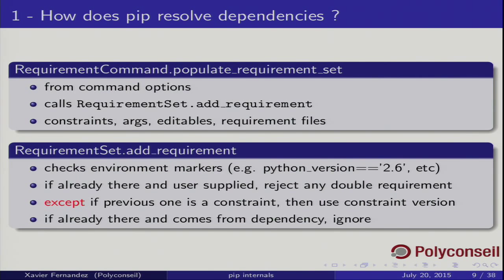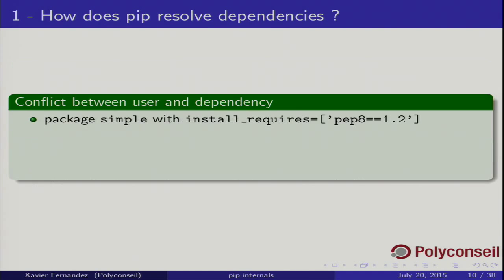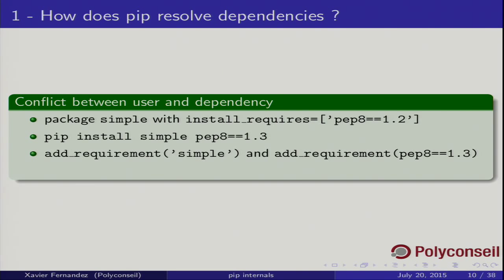Finally, this is how pip currently resolves dependencies: if you already have a requirement and another package requires the same package, it will just ignore it. For example, imagine you have a simple package with an install requirement on pyflakes version 1.2, and you ask pip to install simple and pyflakes 1.3. What happens is: add_requirement(simple), then add_requirement(pyflakes 1.3), and when resolving dependencies and finding pyflakes 1.2, it will be completely ignored.